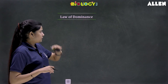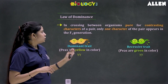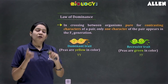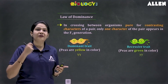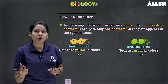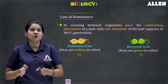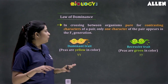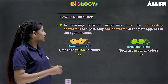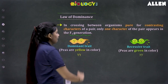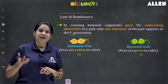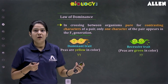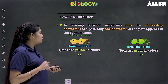Let us get started with the first one — the Law of Dominance. In crossing between organisms pure for contrasting characters of a pair, if you go back to the monohybrid cross, where we referred the parent generation as pure tall and pure dwarf, or homozygous tall and homozygous dwarf, only one character of the pair appears in the first filial or F1 generation, and that is called the dominant trait.